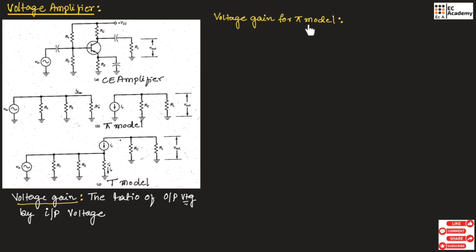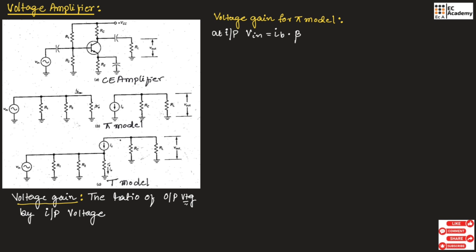Now let us find the voltage gain for the pi model. Figure B shows the pi model, which is an AC equivalent circuit for common emitter amplifier. For this pi model, at the input side, we can write V_in is equal to I_B multiplied with beta times R_E dash. We are using Ohm's law: voltage equals current times resistance. Let us call this equation number 1.